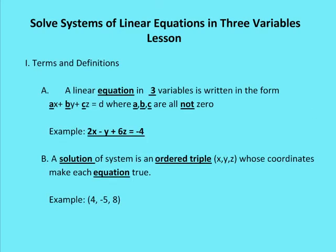Some terms and definitions. A linear equation in three variables is written in the form ax plus by plus cz is equal to d, where a, b, and c are all not zero. If a was zero, then we would have a linear equation in two variables, not in three. So a, b, and c all have to be non-zero numbers. An example would be 2x minus y plus 6z is equal to negative four.